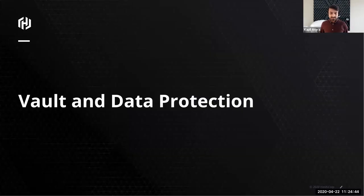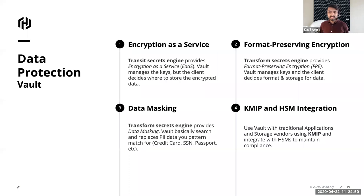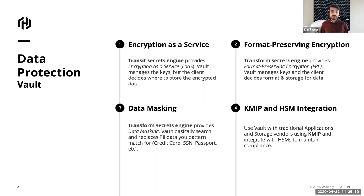Now let's talk about how Vault and its features implement data protection. We'll majorly talk about four features today: first, encryption as a service using the transit secret engine; second, format-preserving encryption; third, data masking — both FPE and data masking with the transform secret engine, which is very new and came out in Vault version 1.4; and lastly, KMIP and HSM integration.